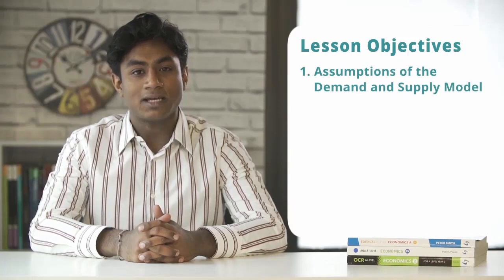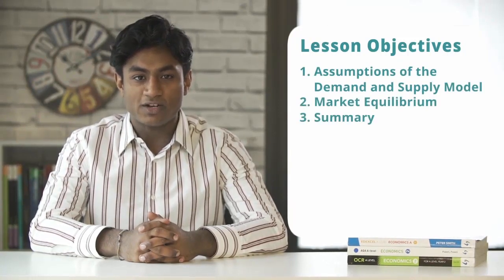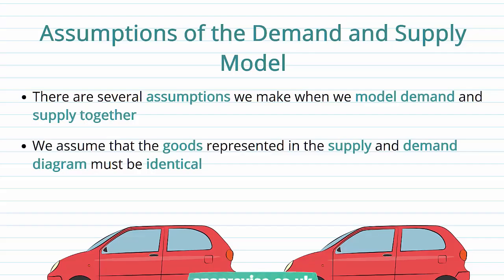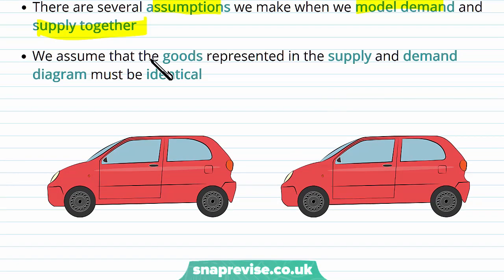Hi guys, in this video we'll be looking at assumptions of the demand and supply model, market equilibrium, and then we'll be finishing off with a summary. We've talked a lot about demand and we've talked a lot about supply, but now we're going to start to put them together to build our demand and supply model. As we discussed previously, when we're talking about models, we're going to have to deal with a couple of assumptions so that we can model our demand and supply together.